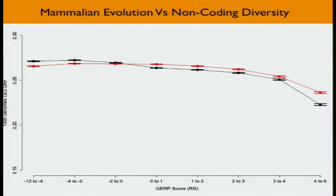We also see this trend, albeit heavily reduced, at the non-coding level. This tells you that being in an exome carries a lot of information — there is more signal to noise when considering conservation measures at the per-base level than at the non-coding level. But we can still see a highly significant negative correlation between past conservation and modern diversity.